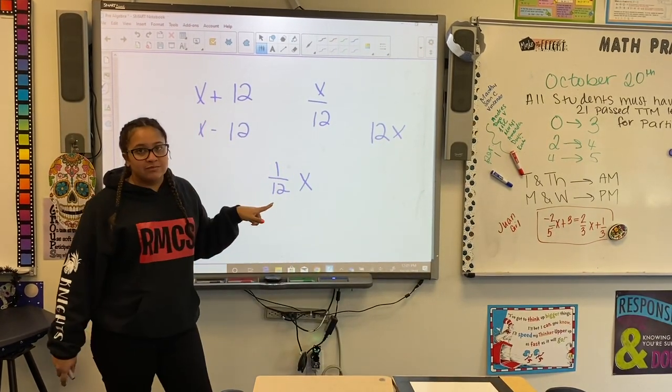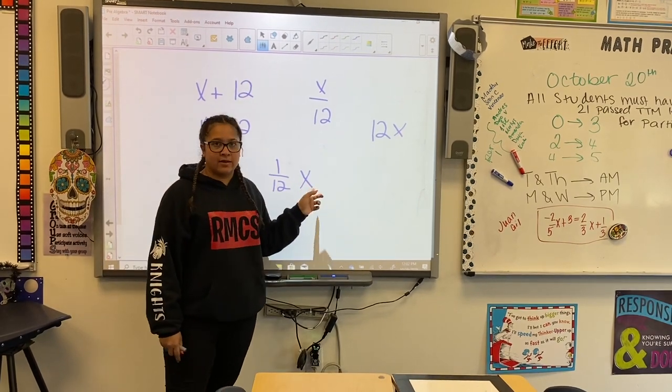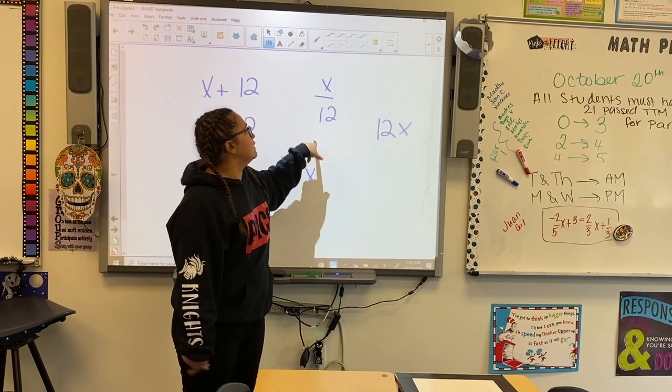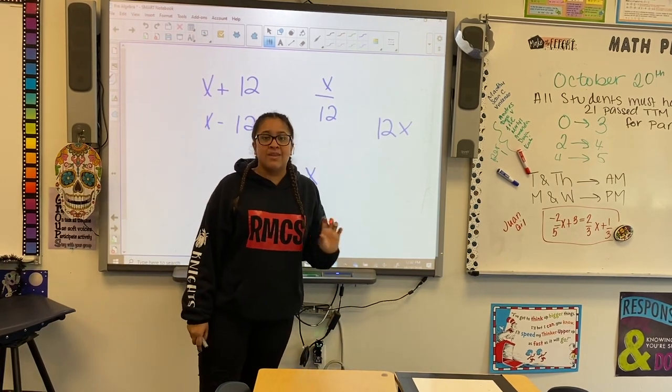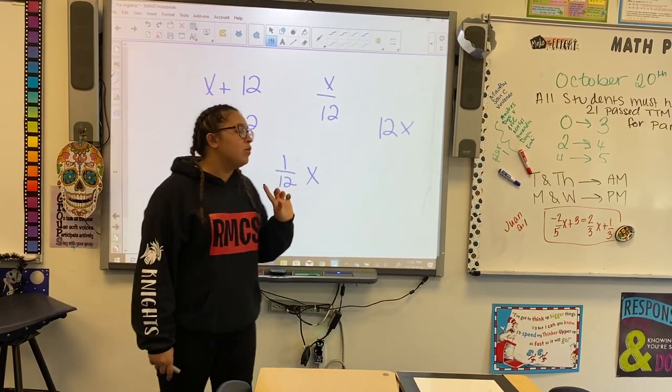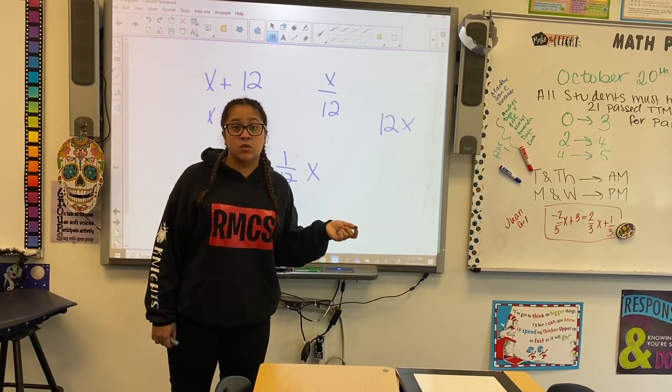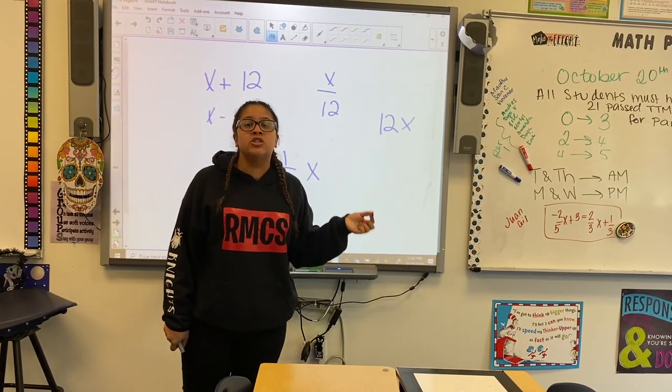Now, we have 1 over 12, x. Okay, but Ms. G, I don't understand. Is it dividing or is it multiplying? It's multiplying. Remember guys, 1 over 12 is what? It's a fraction. What is a fraction? A fraction is a number.